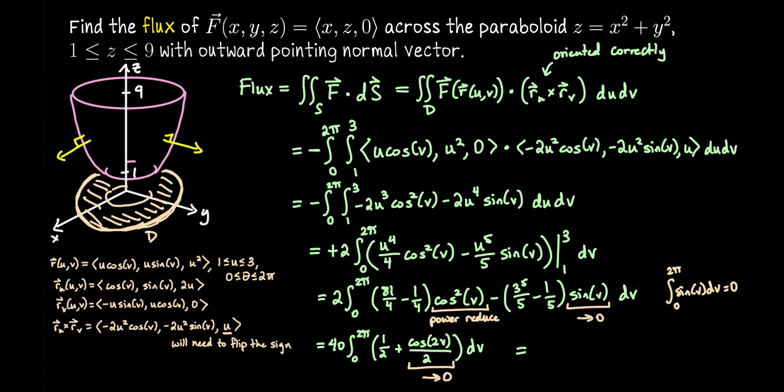We'll have 40 times 1/2 v integrated from 0 to 2π. So plug in top and bottom bounds and you get 40π.